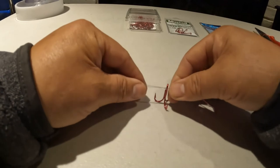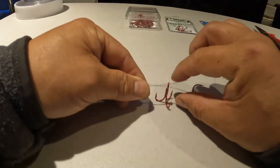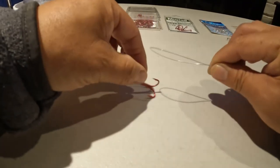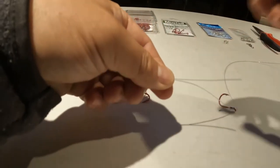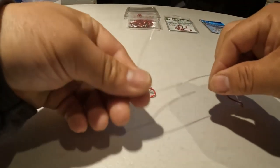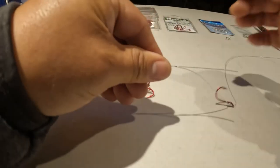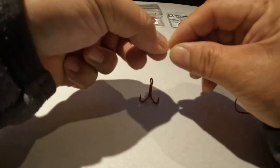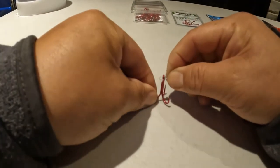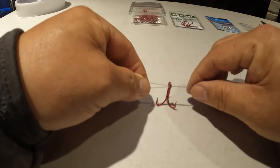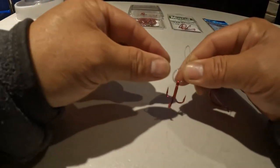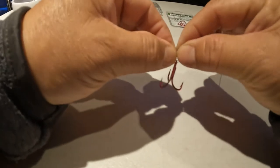And to do the palomar knot, what I did was I just kind of folded this line in half like so. Let me do it over just time. I just fold this line about two to three inches like so, and I'm going to thread this through the eye of the treble hook like so, and just go one overhand knot like so.